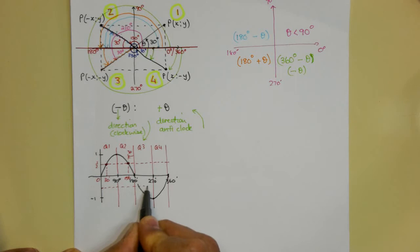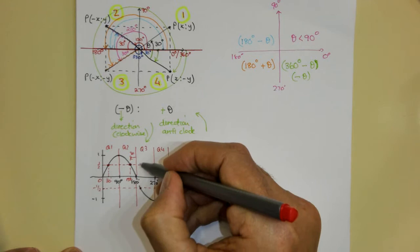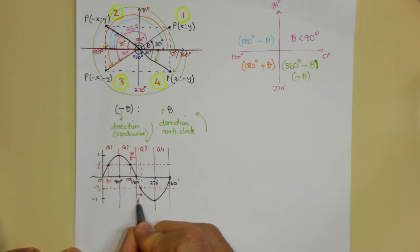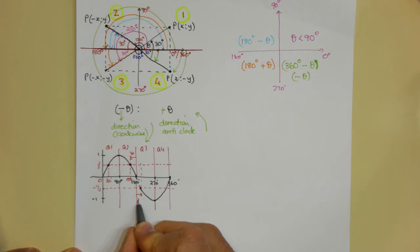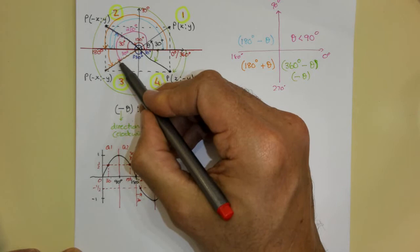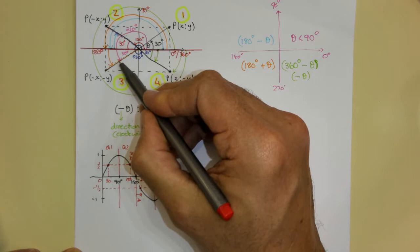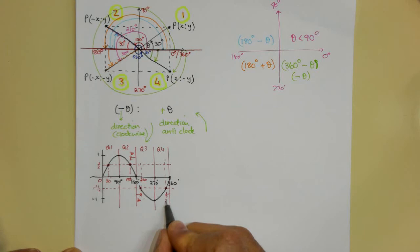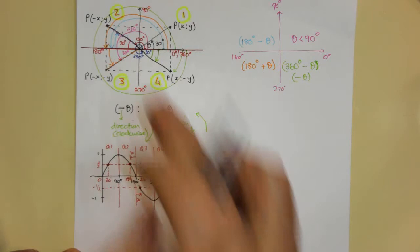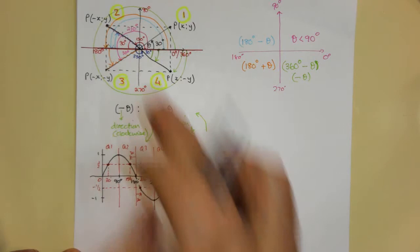Where sine equals minus a half, that occurs at 30 degrees past the 180-degree line, giving 210 degrees — which is 180 plus 30. Then the last point where sine is minus a half is 30 degrees back from the 360-degree line, giving 330 degrees. This is exactly how the rotated angles work in terms of the reduction formulas.